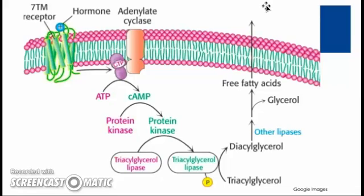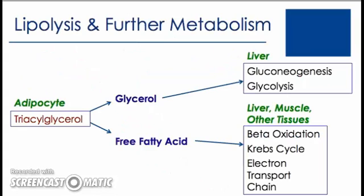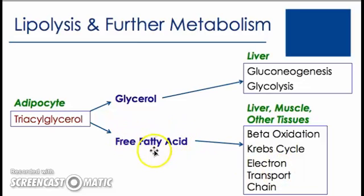After leaving the adipocyte, the free fatty acid is available to be picked up by tissues that undergo beta-oxidation. The glycerol molecule can also leave the adipocyte and be taken up by the liver. In this diagram, we have the adipocyte and the triacylglycerol. When the triacylglycerol is broken down to the free fatty acid and the glycerol components, these separate components undergo further metabolism. The free fatty acids can be picked up by the liver, muscles, or other tissues undergoing beta-oxidation, and can undergo beta-oxidation and further metabolism such as the Krebs cycle, and then the electron transport chain, to produce ATP.